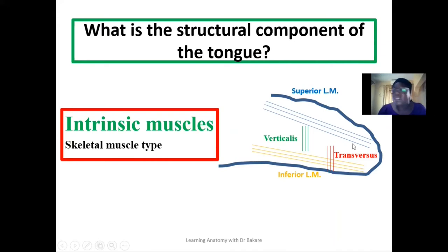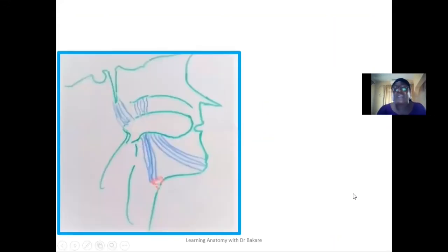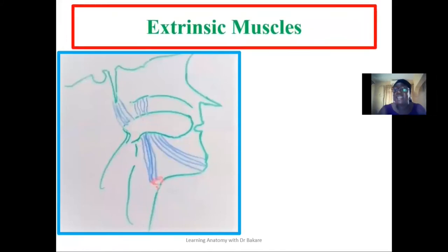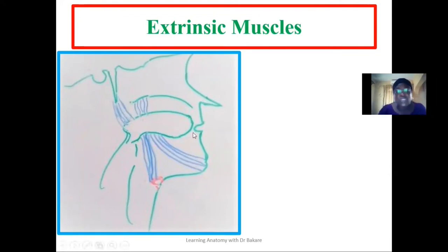So these are called the intrinsic muscles of the tongue, and they are four in number. We also have the extrinsic muscles, which are the external muscles. These muscles are also four in number, and what they do basically is to help hold the tongue in place — to attach or connect the tongue to surrounding structures.